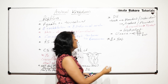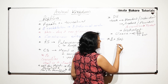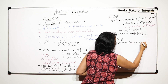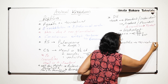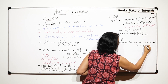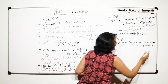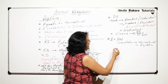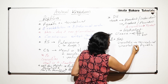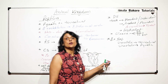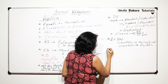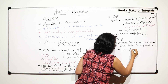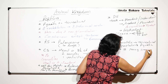In the excretory system, terrestrial reptiles like lizards are uricotelic. Aquatic ones like turtles, tortoises, and crocodiles are ureotelic. The excretion is through metanephric kidneys.